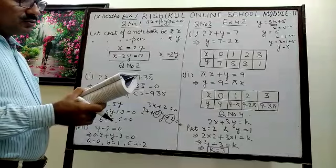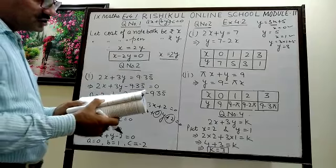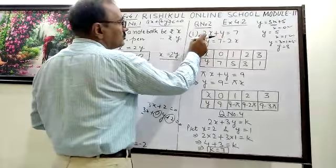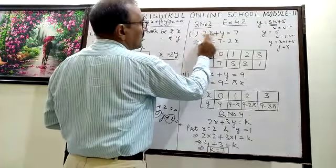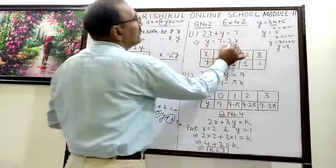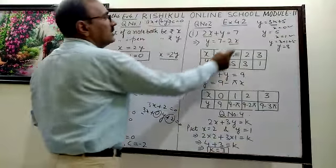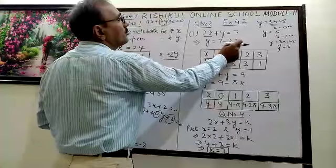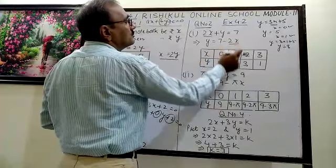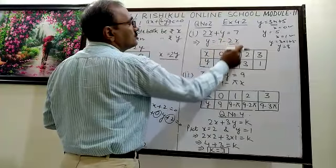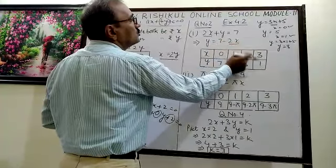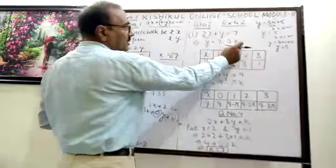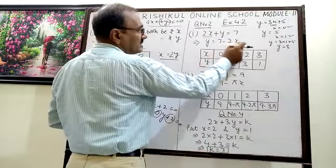Question 2 of exercise 4.2: write four solutions for each of the following equations. First part: 2x plus y equals 7, so y equals 7 minus 2x. Putting x equals 0 gives y equals 7. Putting x equals 1 gives y equals 5. Putting x equals 2 gives y equals 3. Putting x equals 3 gives y equals 1.